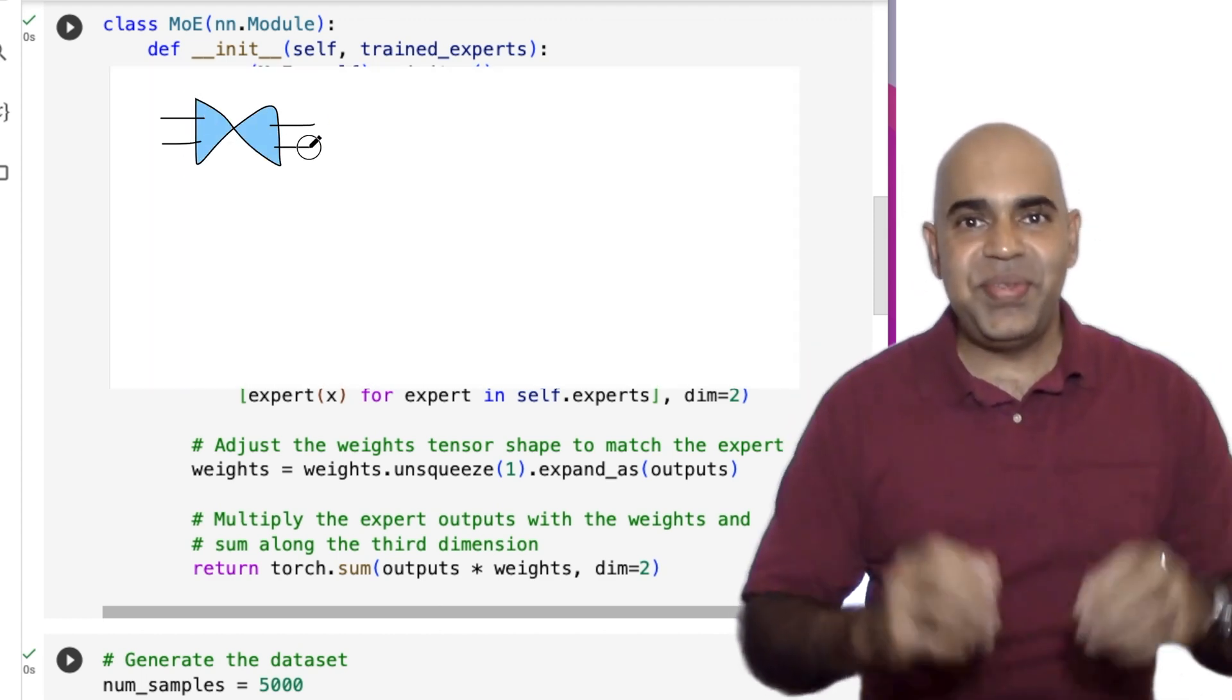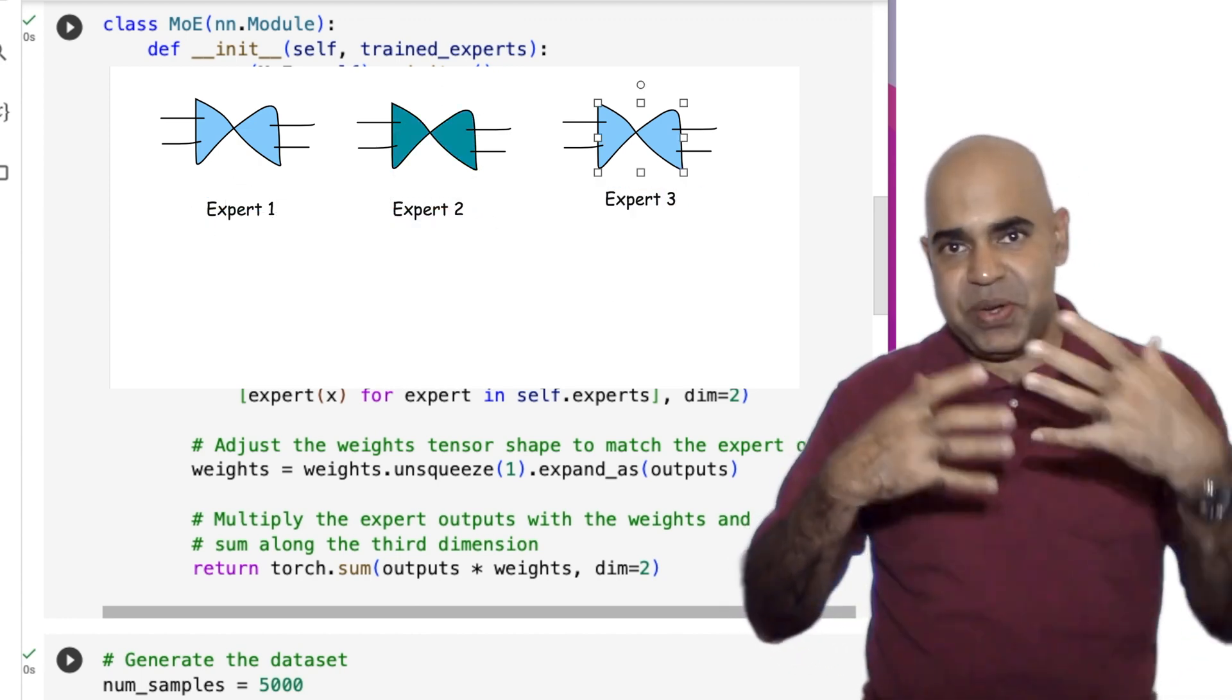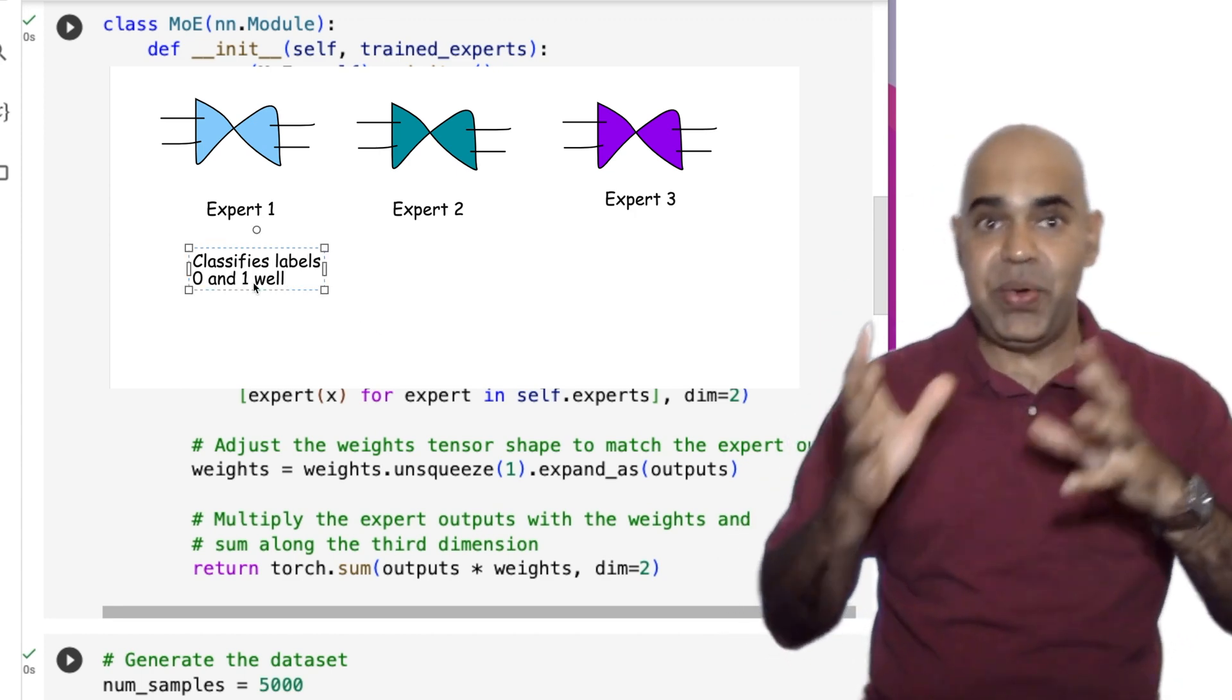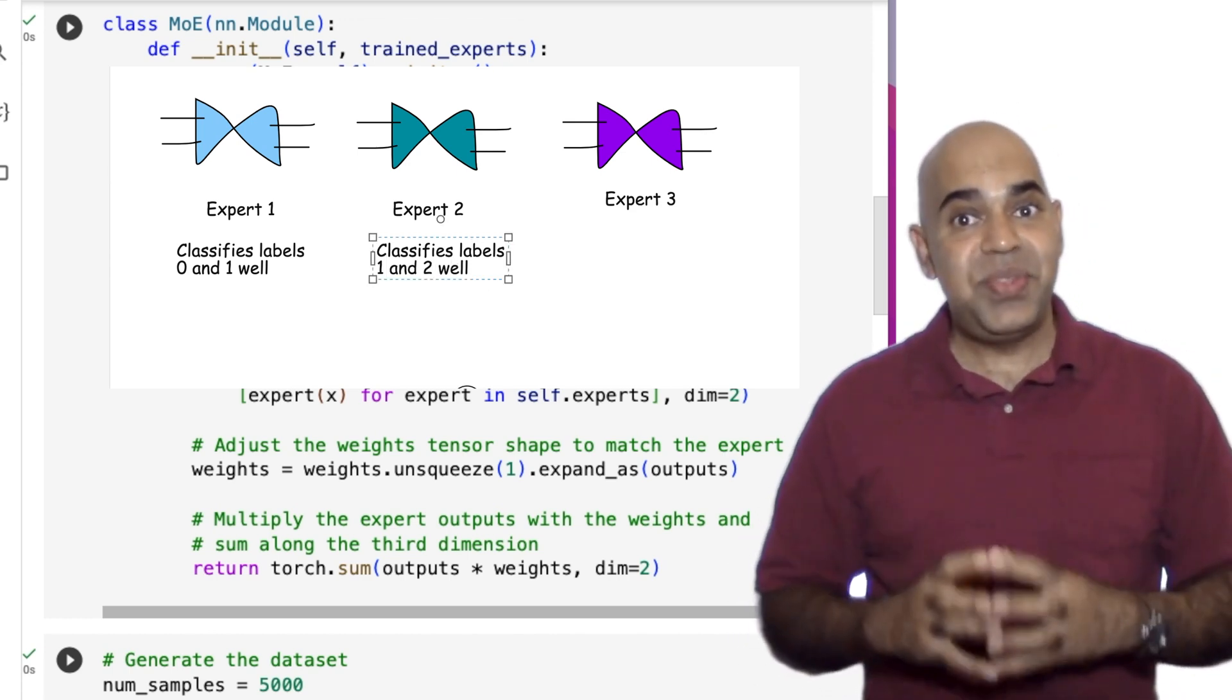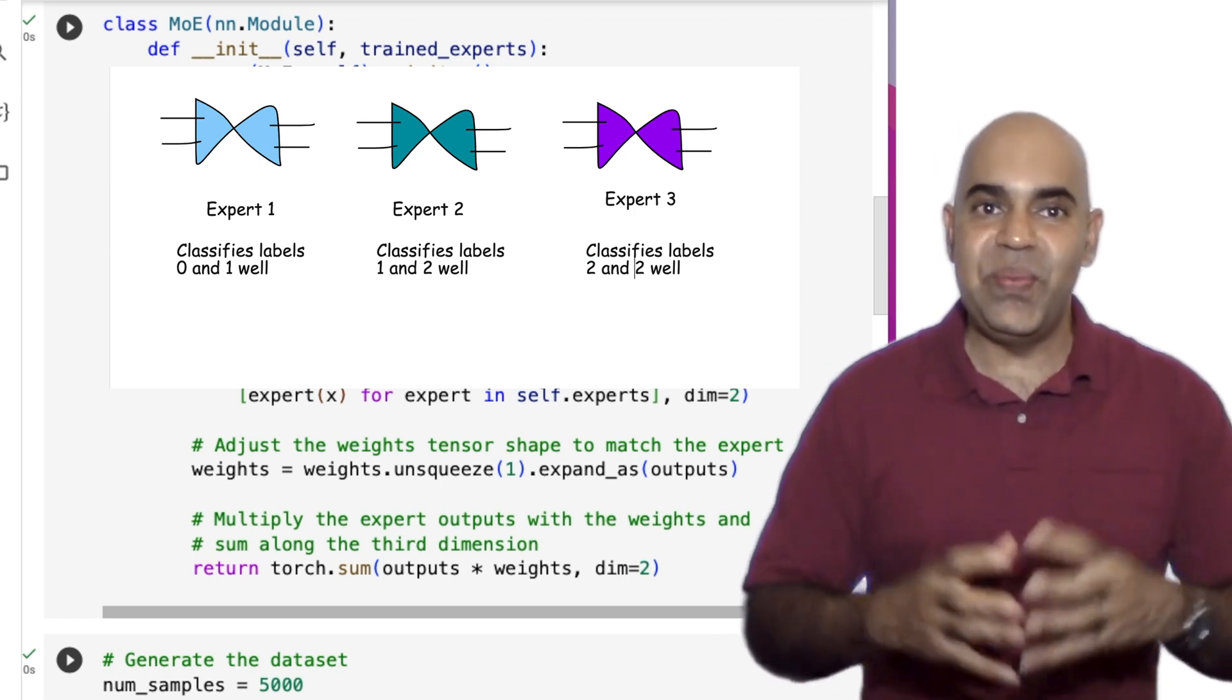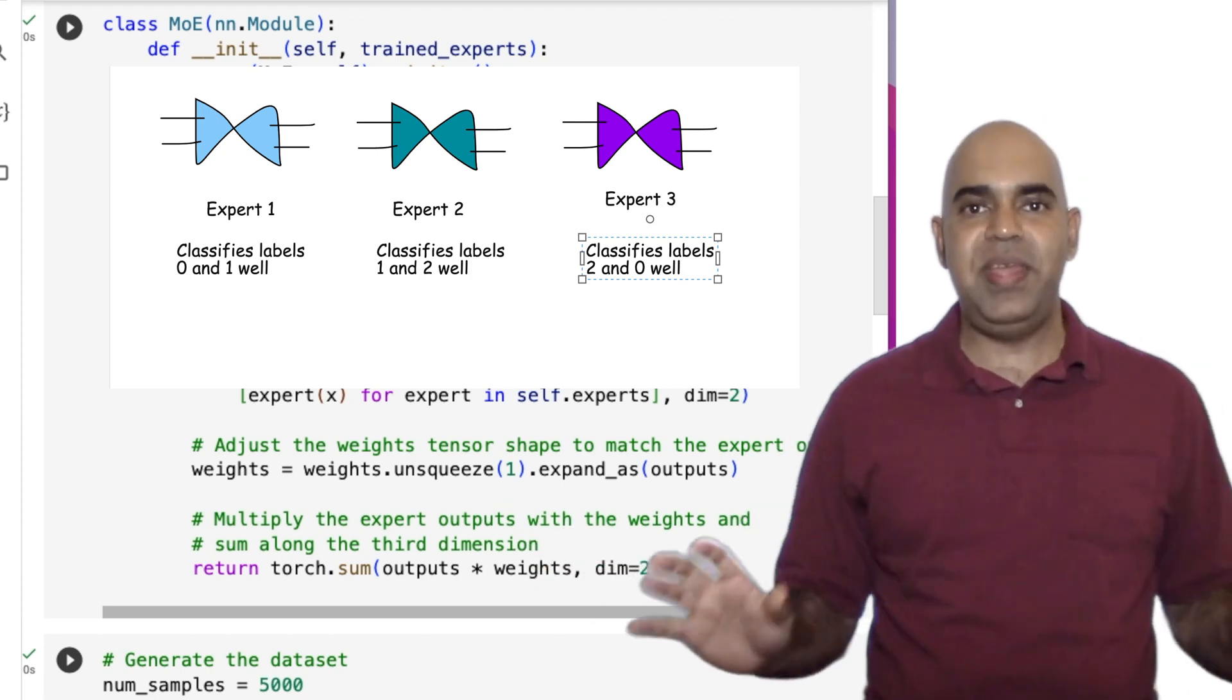We will create three experts. We will train them to solve a classification problem. Purposefully, Expert 1 will be efficient at classifying class levels 0 and 1. Expert 2 will be good at classifying class levels 1 and 2. And Expert 3 will be able to classify class levels 2 and 0 well. That is, a single expert is not trained to be good at classifying all three class levels.